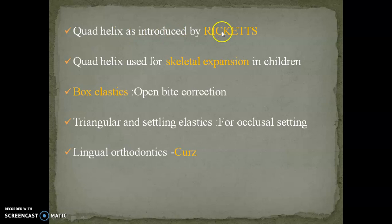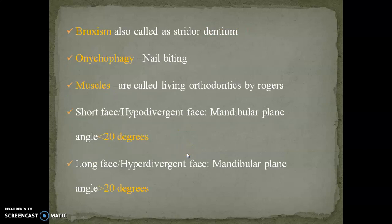The quad helix was introduced by Ricketts and is used for skeletal expansion in children. Box elastics are used for open bite correction. Triangular and settling elastics are used for occlusal settling. The term lingual orthodontics was coined by Kurtz. Bruxism is also known as Strader dentium. Oncophagy is also called nail biting. Muscles are called living orthodontics by Rogers. If there is a short face or hypodivergent face, the mandibular plane angle is less than 20 degrees. If the face is long or hyperdivergent, the mandibular plane angle is more than 20 degrees.